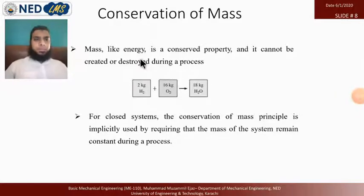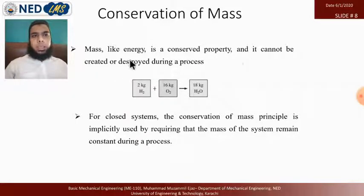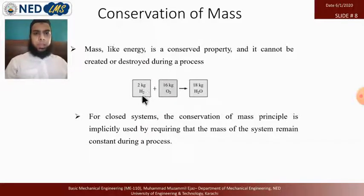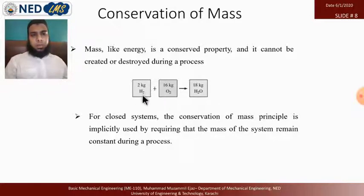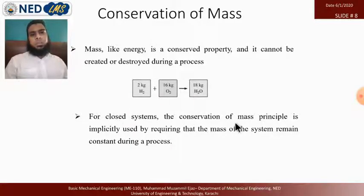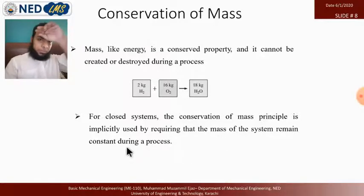In conservation of mass, just like energy, mass is a conserved property — it cannot be created or destroyed during a process. For example, 2 kg of hydrogen gas mixed with 16 kg of oxygen gas combines to form water. The mass is not created or destroyed; it changes form through a chemical reaction. For a closed system, conservation of mass means the mass remains constant during the process.